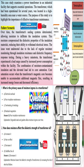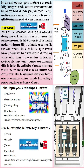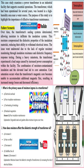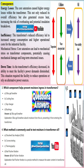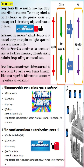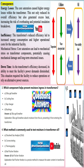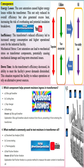Transformer oil facilitates effective cooling and heat transfer, protects the core and coil assembly by filling gaps within the cellulose, and limits oxygen exposure to cellulose and other oxidation-prone materials. On the other hand, cellulose contributes mechanically by supporting the windings and thermally by forming cooling ducts.